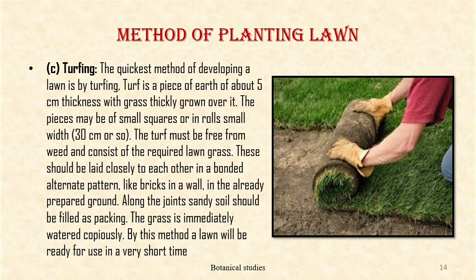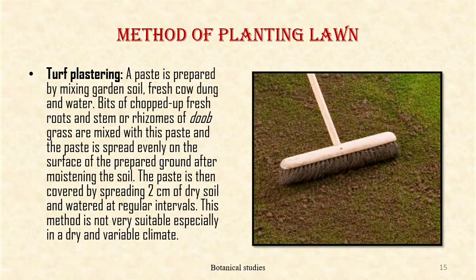Turfing: The quickest method of developing a lawn is by turfing. A turf is a piece of earth of about 5 cm thickness with grass thickly grown over it. The pieces may be of small squares or in rolls of about 30 cm or so. The turf must be free from weeds and consist of the required lawn grass. These should be laid closely to each other in a bonded alternate pattern like bricks in a wall. In the already prepared ground, sandy soil should be filled along the joints as packing. The grass is immediately watered copiously. By this method, a lawn will be ready for use in a very short time.